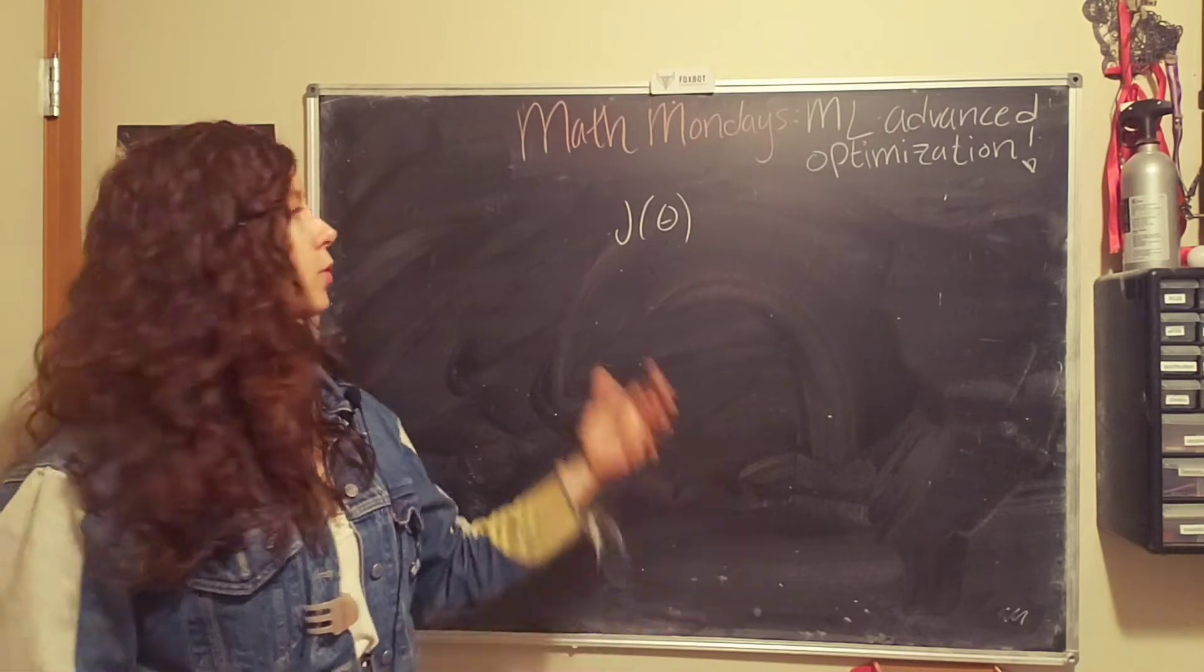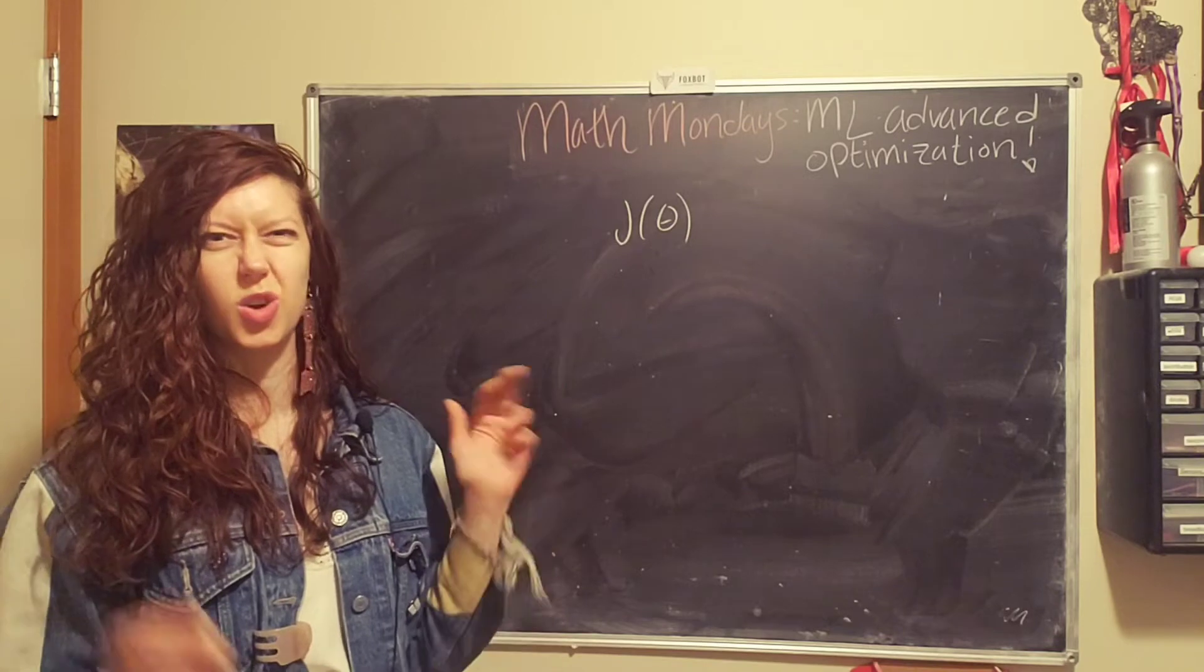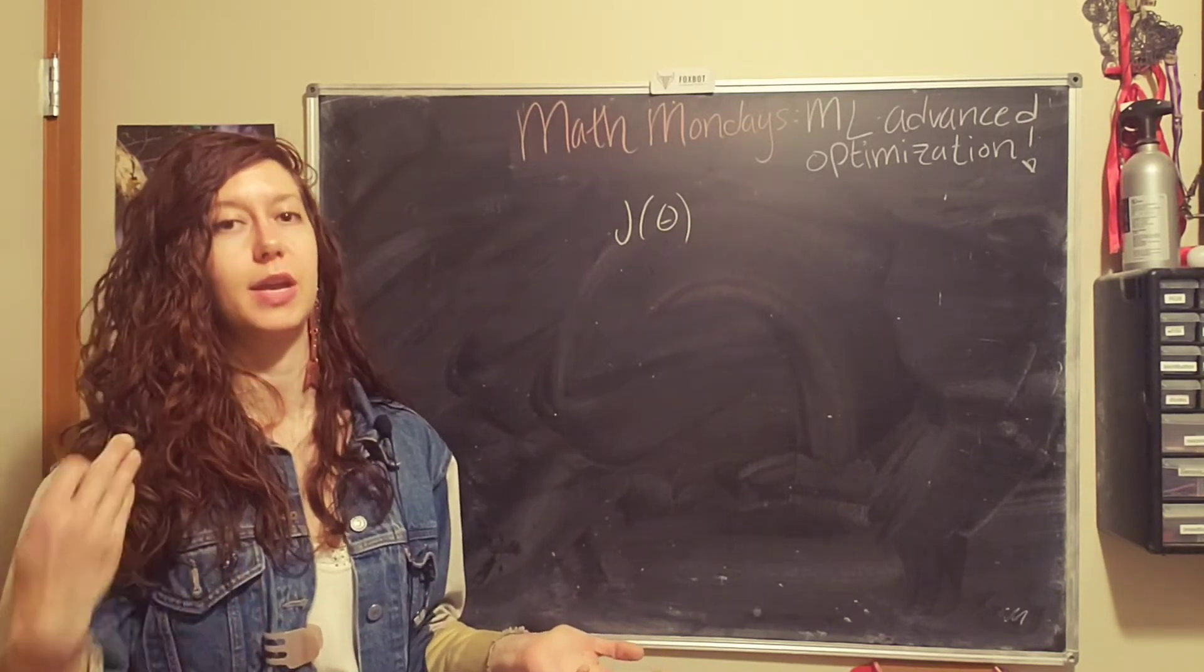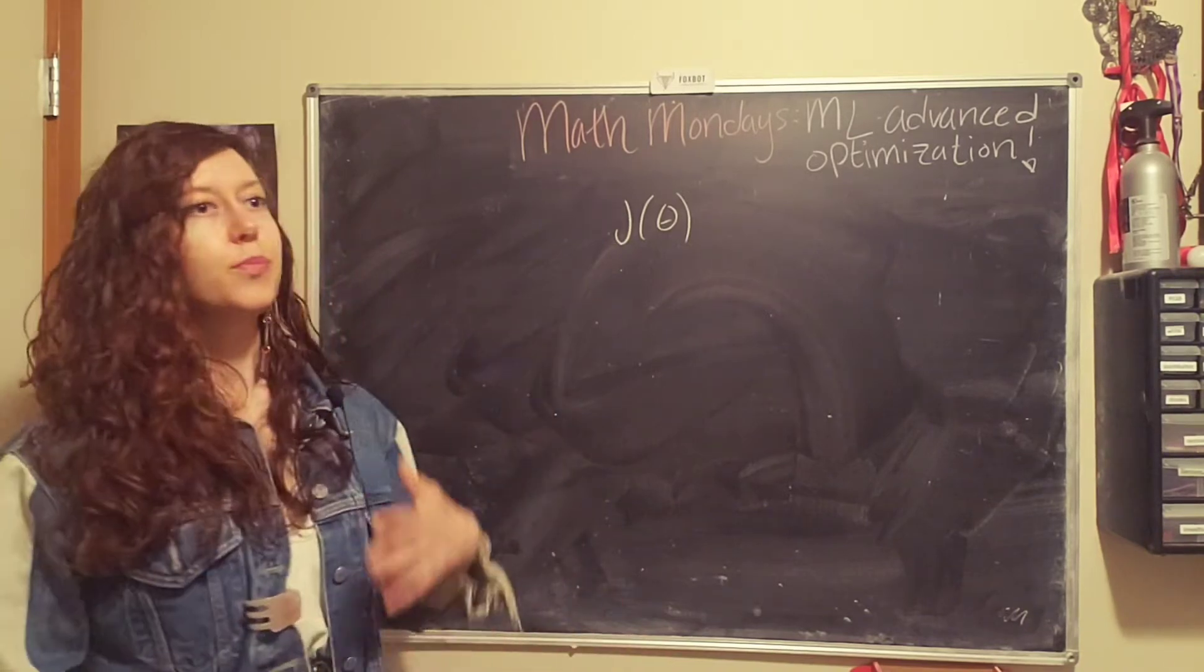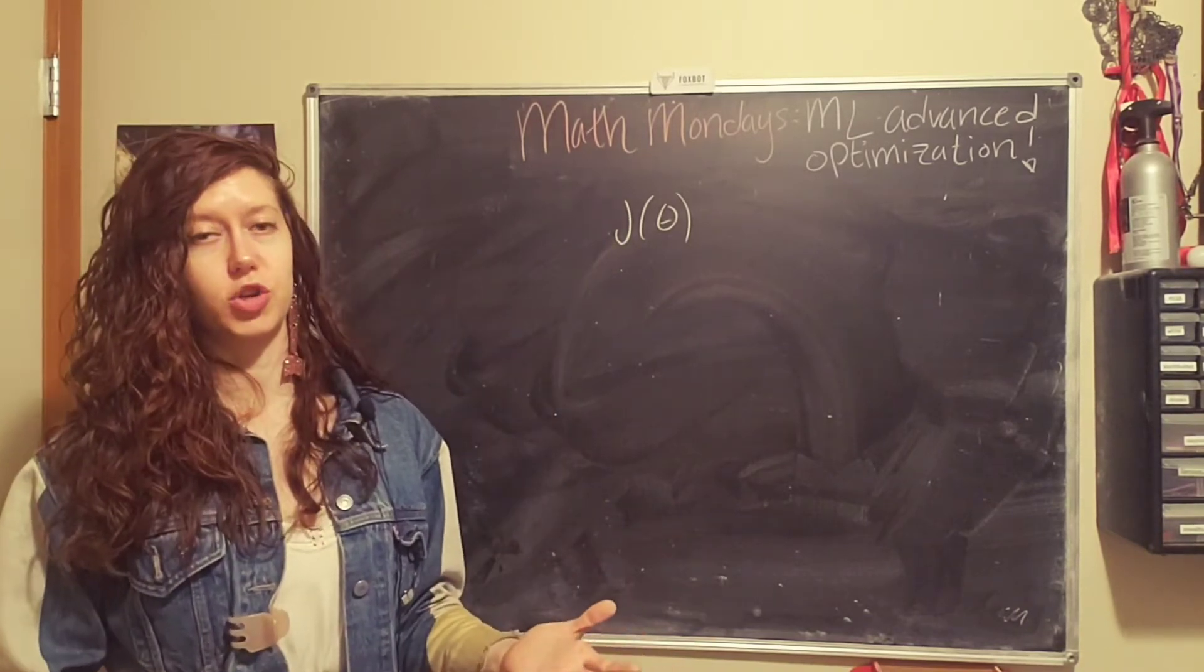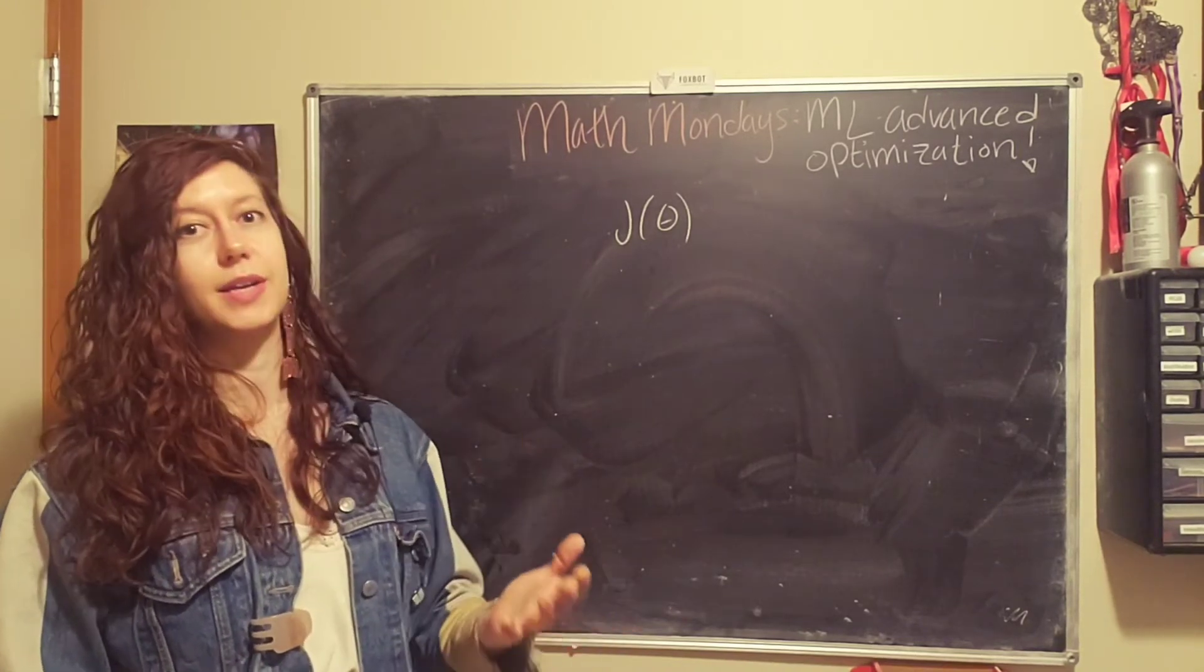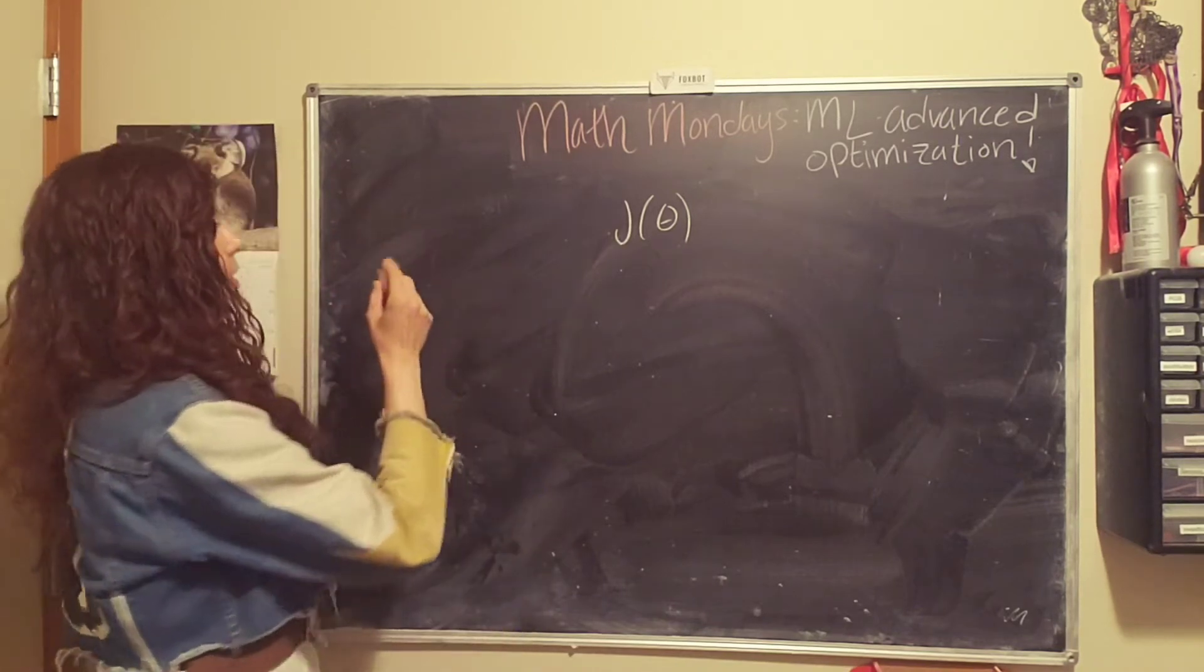The cost function measures the difference between a hypothesis or our guess function and the actual data that we have. So the smaller our cost function is, or the more we minimize it, the more accurate our prediction is.